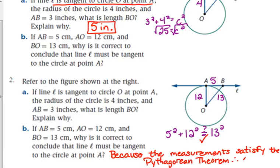Therefore, angle OAB is a right angle. So if they ask you, is this line tangent to the circle, you've got to check the Pythagorean theorem based on the measurements that they give you.